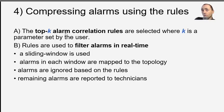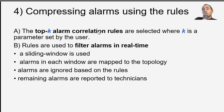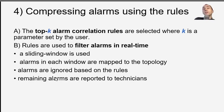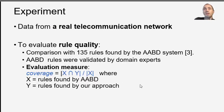After we find the alarm correlation rules, we use them to reduce the number of alarms — we call this compression. Instead of using all rules, which would be too many, we find the top-k rules, like the top 100 or top 500, where k is a parameter set by the user. We can then filter the alarms in real time, ignoring some alarms based on the rules, and the remaining alarms are reported to the technician to fix.